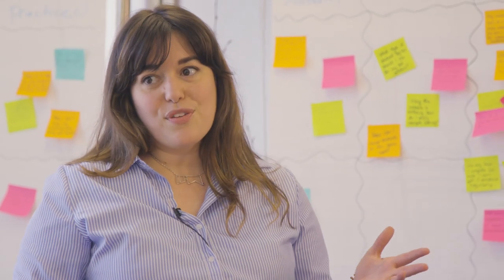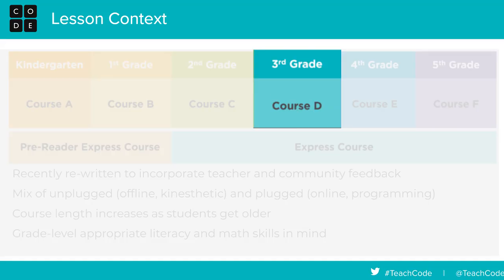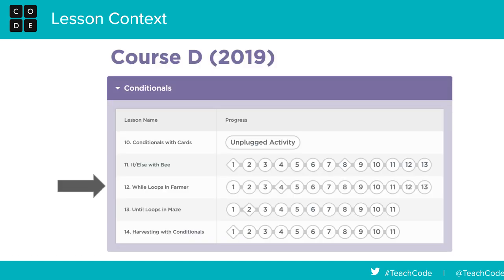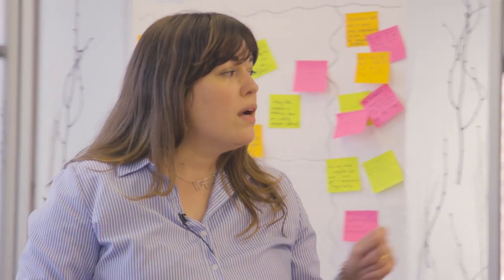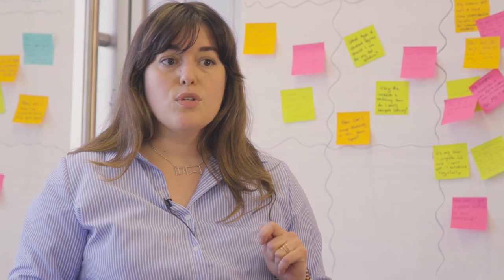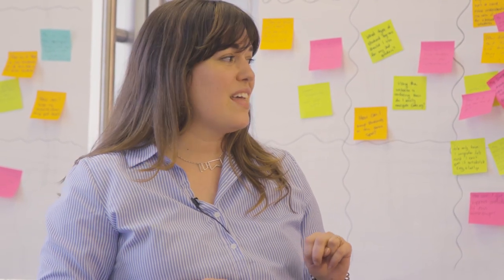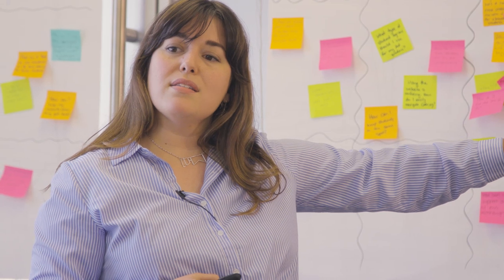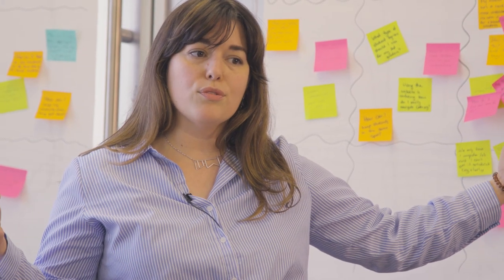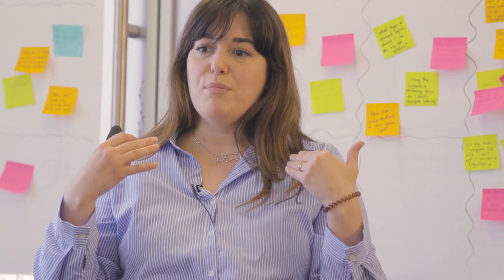Let me give you some context for the lesson we're about to do. This lesson falls in Course D, which is meant for third grade students, and it's pretty far into the course — it's lesson number 12. It introduces the concept of while loops and uses the farmer. In this lesson we are going to be working with one another, so you will need one computer per two people. When you see my next slide, we'll all be in our roles — each of you as learners and me as the teacher.